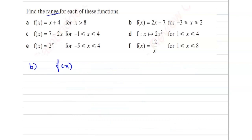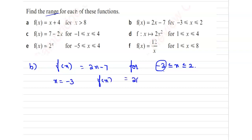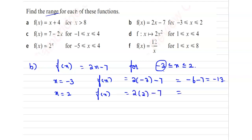The second one: we are given f of x equal to 2x minus 7 for minus 3 less than or equal to x less than or equal to 2. Here the domain is given from minus 3 to 2. Take x equal to minus 3. So, f of x equal to 2 times minus 3 minus 7, which is minus 6 minus 7, so minus 13. Similarly, take x equal to 2. f of x equal to 2 times 2 minus 7, so 4 minus 7 is minus 3. So here the range will be from minus 13 less than or equal to f of x less than or equal to minus 3. That is the answer.